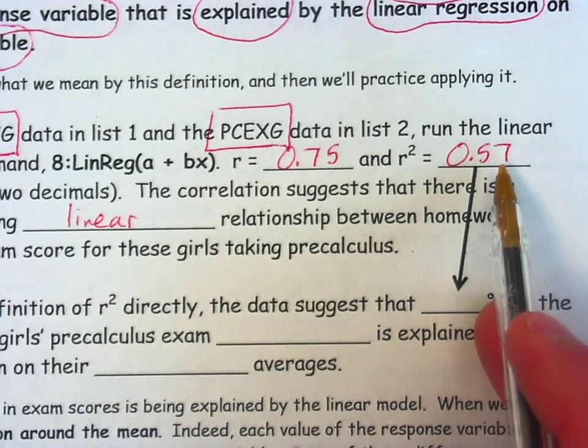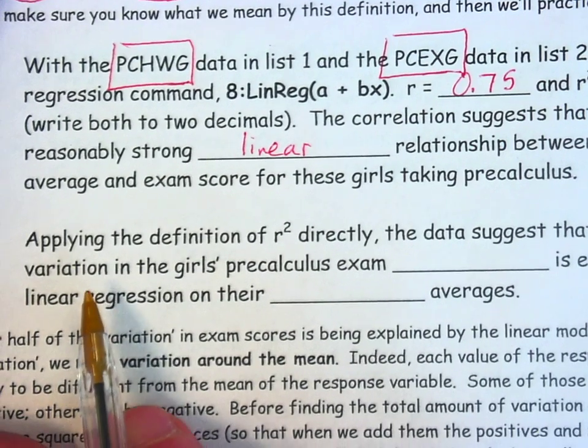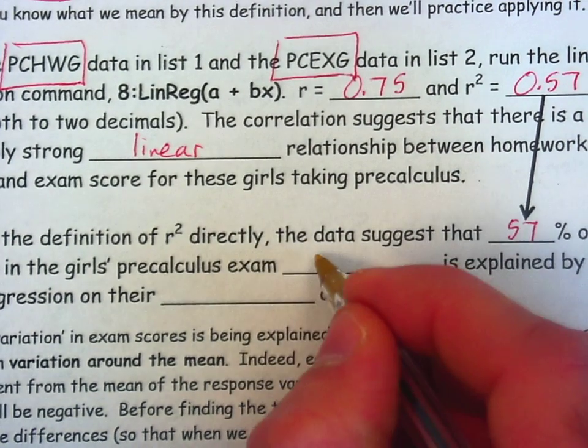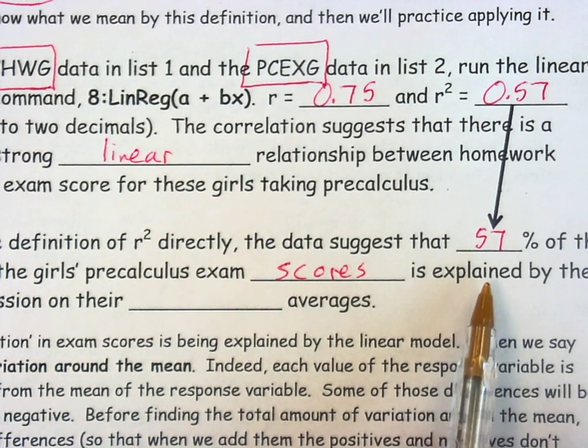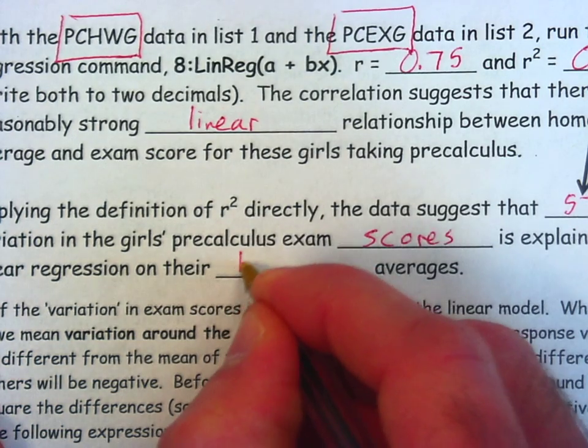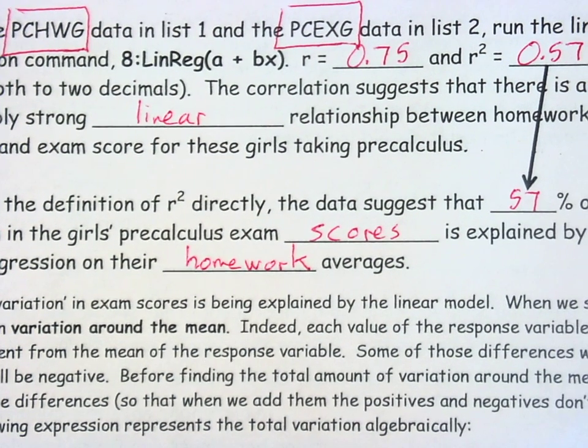However, the 0.57 is. The data suggests that 57 percent of all of the variation in these girls' pre-calculus exam scores, so we have variation in the response variable, is explained by the linear regression on their homework averages, on this specific explanatory variable. So that is the actual interpretation. Over half, then, of the variability in exam scores is explained by this linear model using homework averages, so we need to decide what kind of variability are we talking about, and how do we measure that.